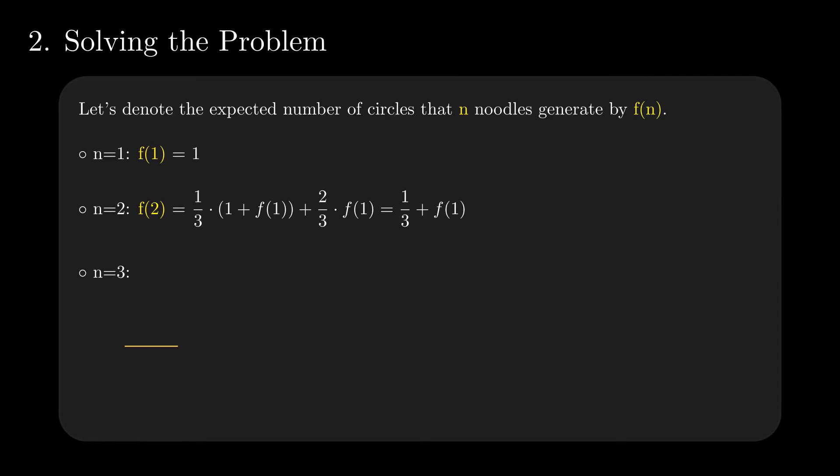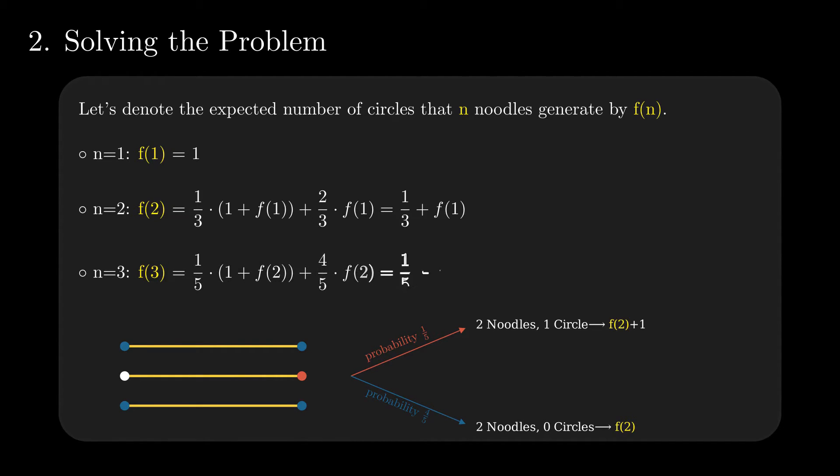One more example is a ball with 3 noodles. Fix the first noodle end we choose. In the manner of the previous example, 1 out of the remaining 5 will generate a circle after the first join, alongside the other two noodles. The resulting expectation is then 1 plus f(2). For the other branch, which carries a probability of 4 out of 5, we obtain a ball with two noodles with an expected value of circles of f(2). The weighted sum of the two branches implies that f(3) equals 1 fifth plus f(2).